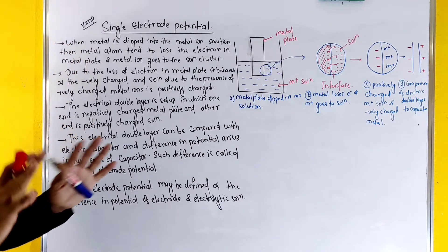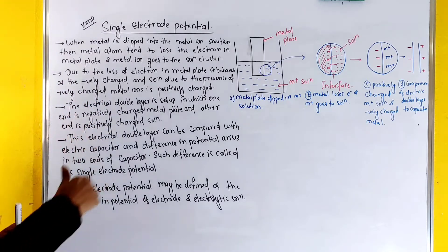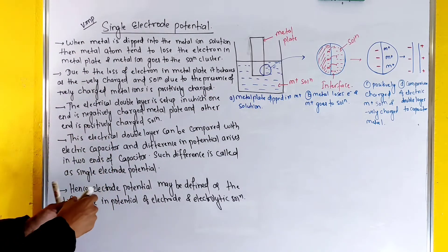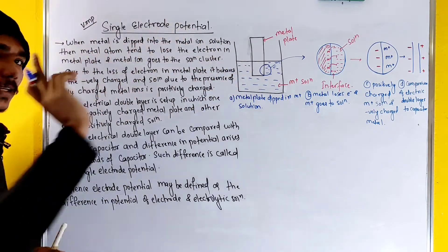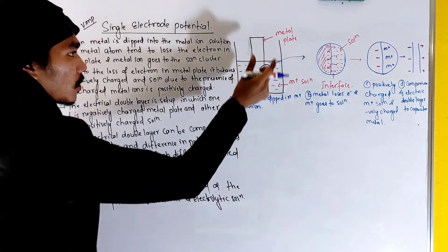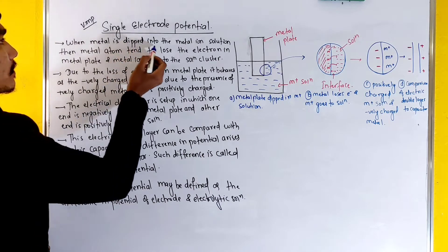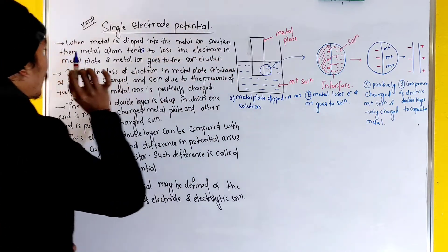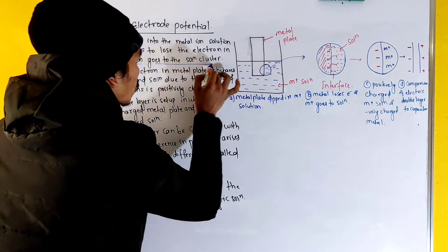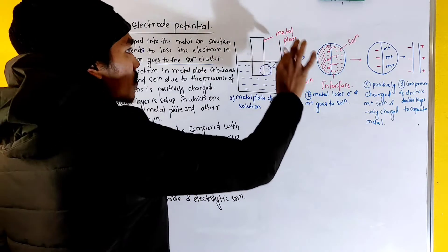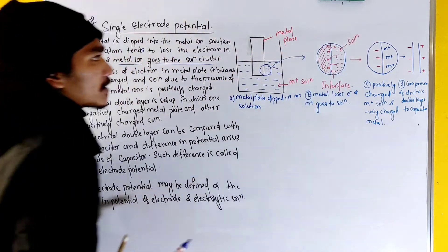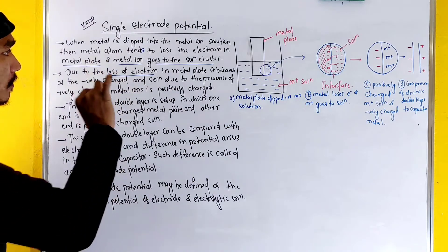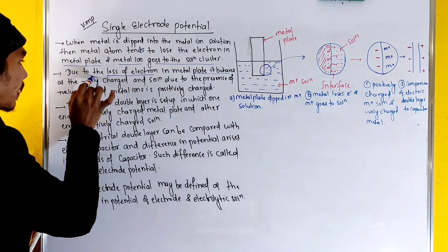When metal is dipped into the metal ion solution, the metal atom tends to lose electrons at the metal plate and the metal ion goes into the solution cluster. Due to the loss of electrons, the metal plate behaves as negatively charged.